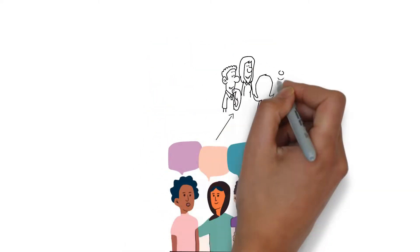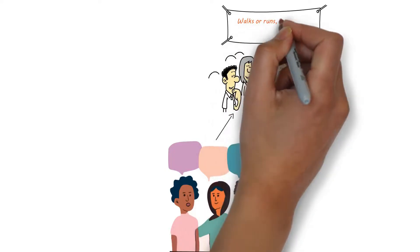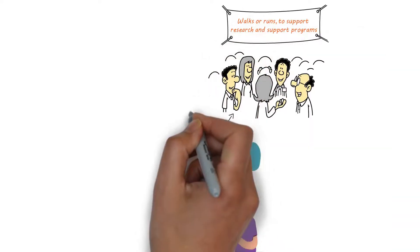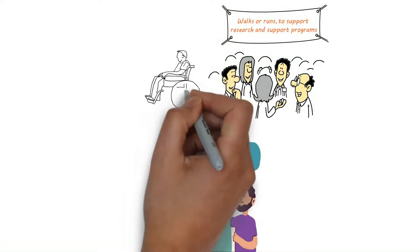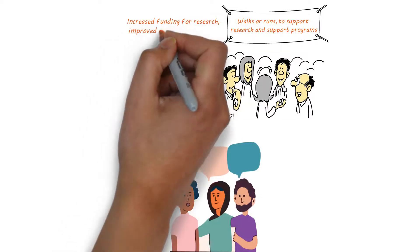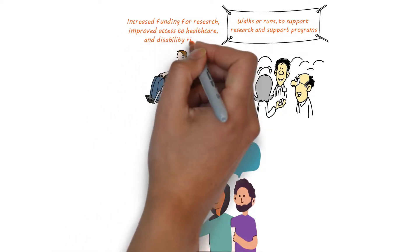One way to support advocacy and awareness efforts is to participate in fundraising events, such as walks or runs, to support research and support programs. Another way to help is to advocate for public policies that support people with MND, such as increased funding for research, improved access to healthcare, and disability rights.